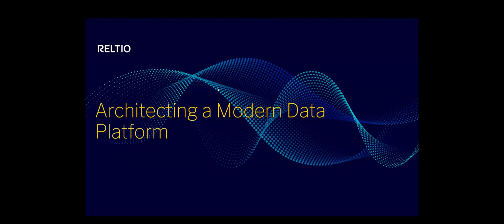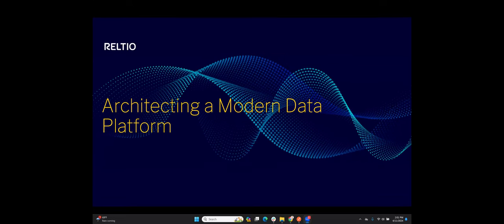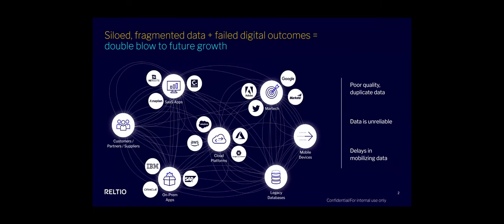I'll go ahead and hop right into this. I know we only have an hour, so this is a very complicated and exciting topic. In today's digital landscape, we find that data is more and more siloed, more and more fragmented. That fragmented and siloed data is leading to failed digital outcomes — poor quality, duplicated, unreliable data.